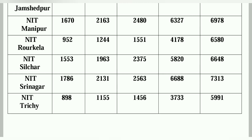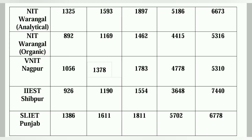NIT Trichy भी top 4 institutes में है CCMN counselling में। इसका closing rank दूसरे NITs और BNITs की तुलना में कम रहता है। General के लिए 898 — मतलब 900 के अंदर होना चाहिए। EWS के लिए 1155, OBC के लिए 1456, SC के लिए 3733, ST के लिए around 6000। उसके बाद next institute है NIT Warangal।